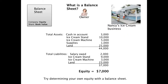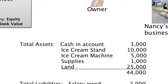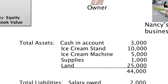Here I took a very generic balance sheet for Nancy's ice cream business. On the top you can see the total assets. The cash in the account: Nancy has $3,000 on hand in her corporate bank account. Her ice cream stand is worth $10,000. The ice cream machine is worth $5,000. The supplies on hand are $1,000. And the land she bought for her ice cream stand is $25,000. When we sum up those assets, it's $44,000. Now let's look at the total liabilities.